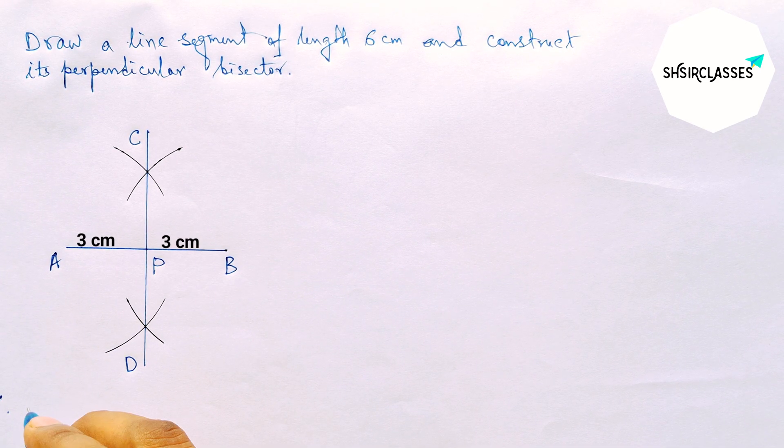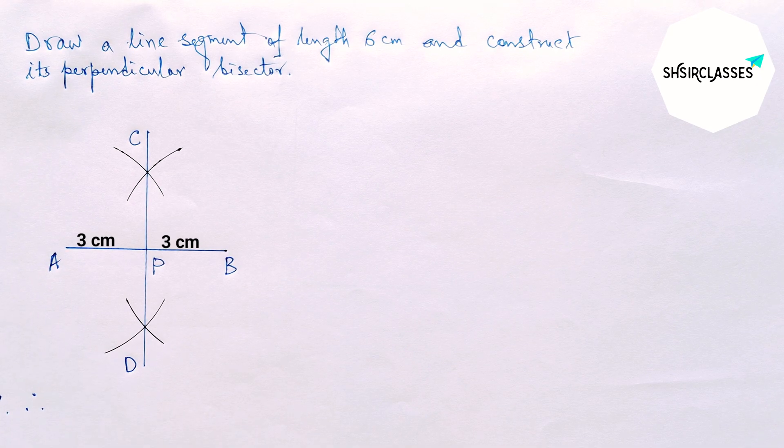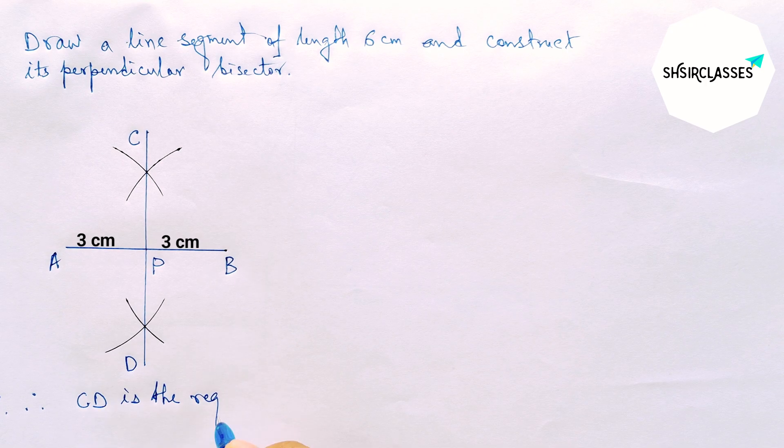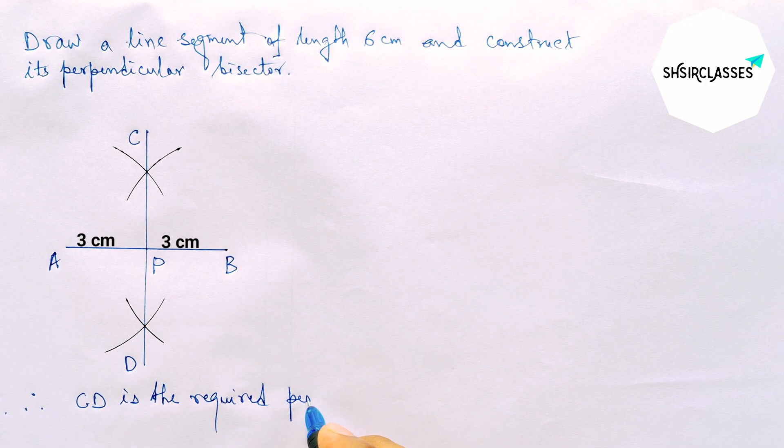So therefore, CD is the required perpendicular to the line AB.